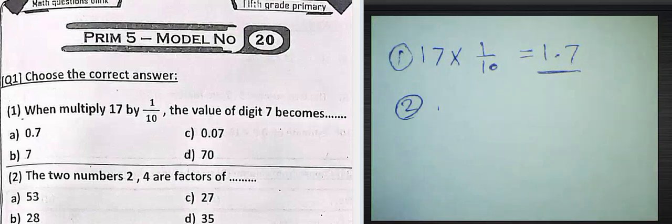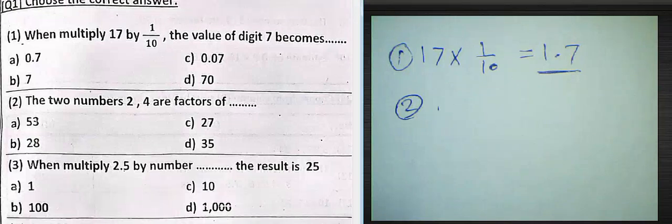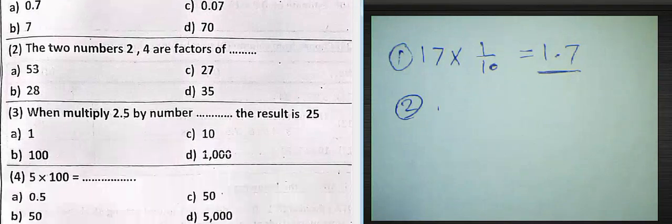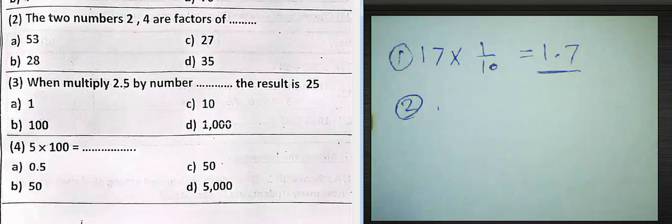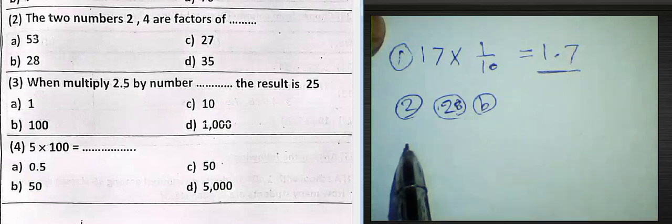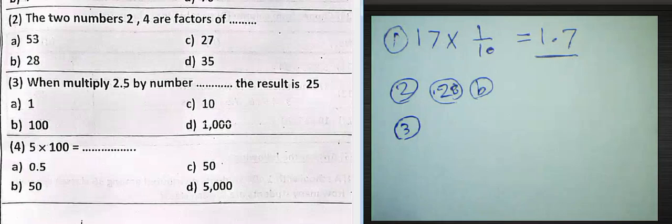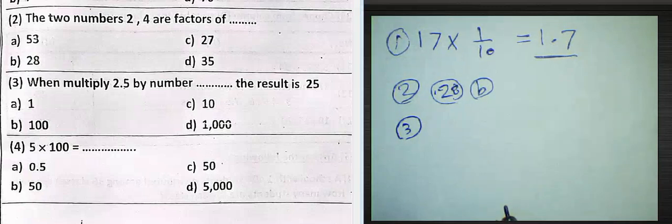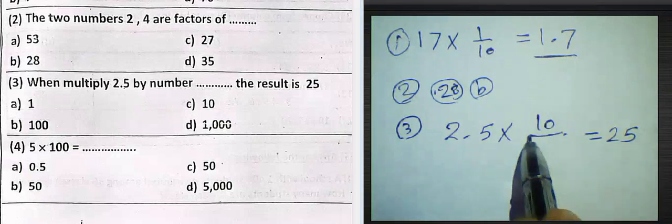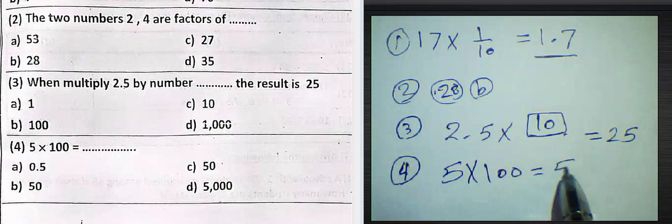Question number two: the two numbers 2, 4 are factors of what? Twenty-eight, because twenty-eight can divide by two and can divide by four. So question number two, we must choose B, twenty-eight. Question number three: when multiply 2.5 by a number, the result is 25. 2.5 times 10 equals 25.